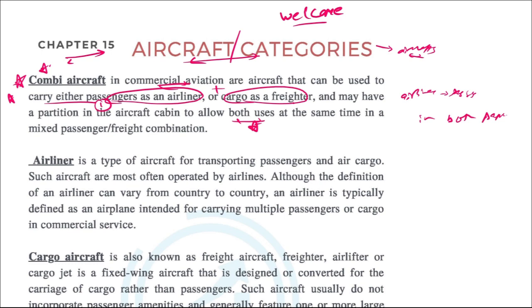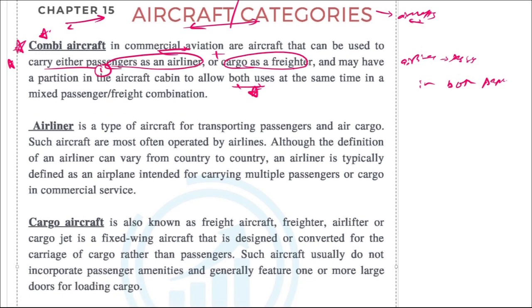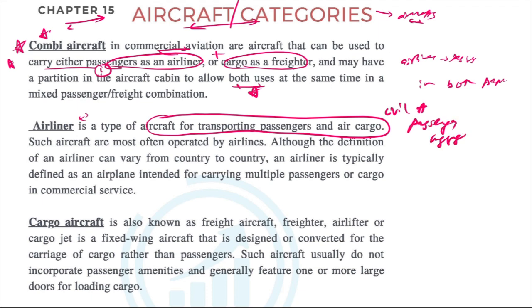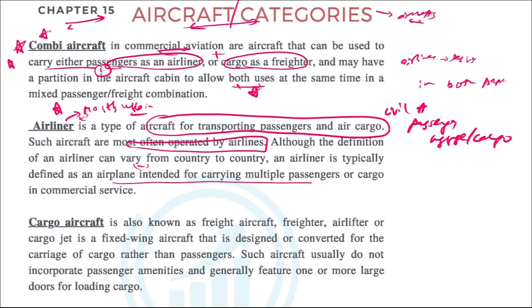Next is the normal airliner. An airliner is an aircraft for transporting passengers and air cargo in normal civil aviation. Passengers will be traveling along with their luggage, and sometimes cargo as well. These types of aircraft are known as airliners and are the most commonly used aircraft in aviation. They are often operated by airlines. Typically, an airliner is an airplane intended for carrying multiple passengers or cargo in commercial service.